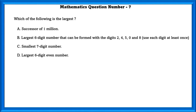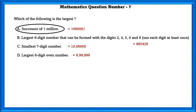Mathematics question number 7. Which of the following is the greatest? The successor of 1 million is 1,000,001. The largest 6-digit number that can be formed using each digit at least once is 8,85,420. The smallest 7-digit number is 10 lakh. The largest 6-digit even number is 9,99,998. So, the largest number here is 1,000,001.